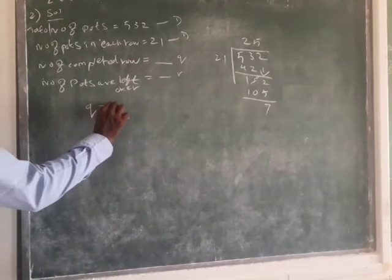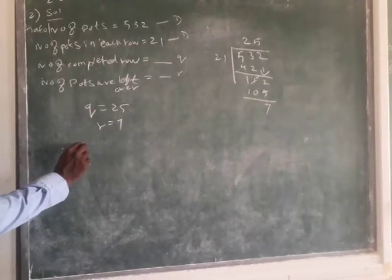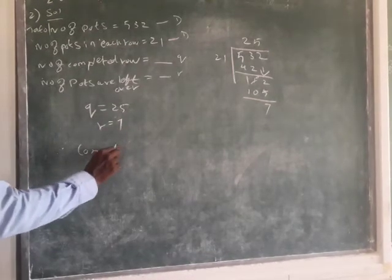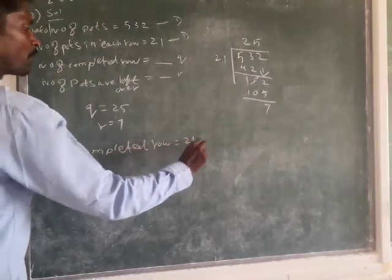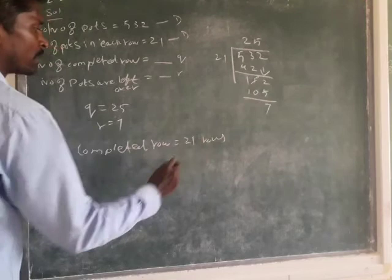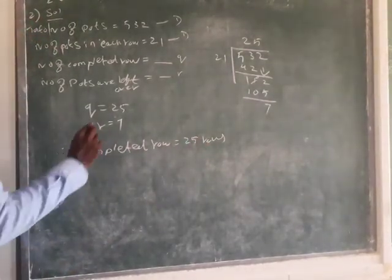If you want to write as a mathematical notation: q equals 25, they want to have r equals 7. Therefore, the complete rows: 25 rows. Then what is the remaining?